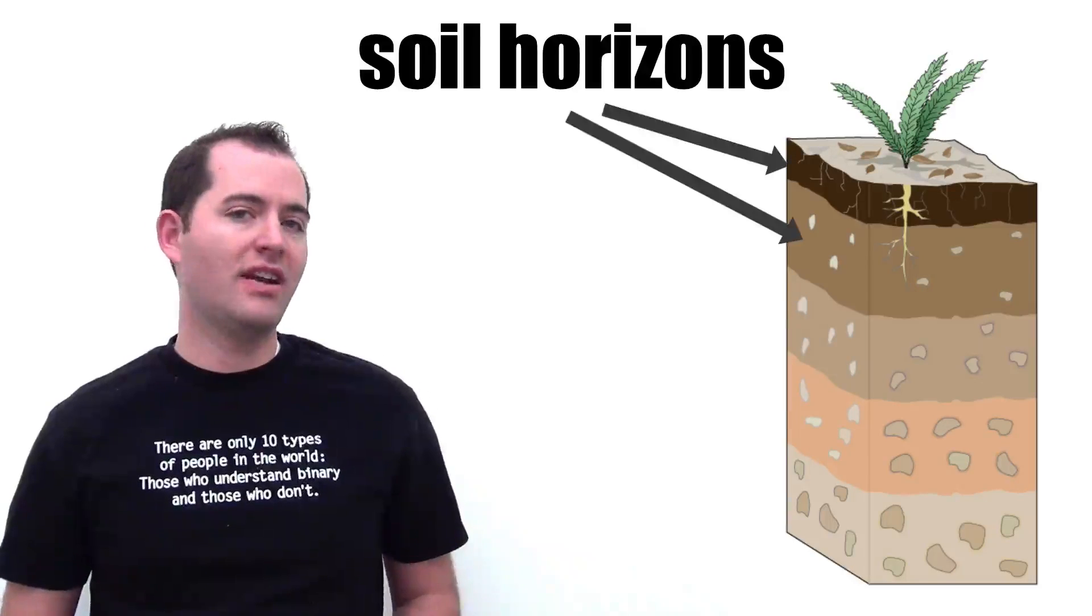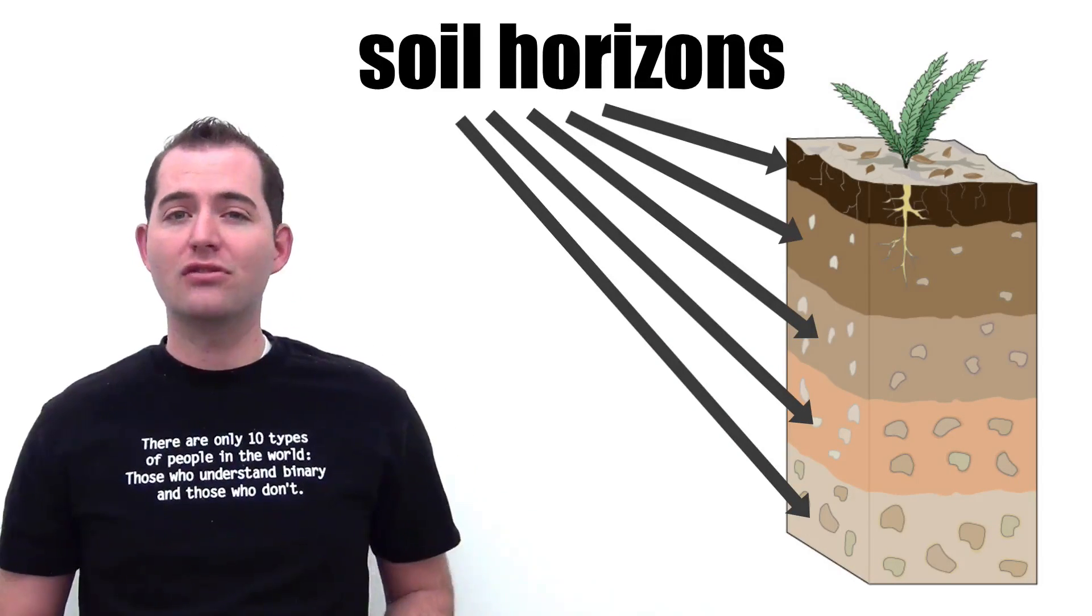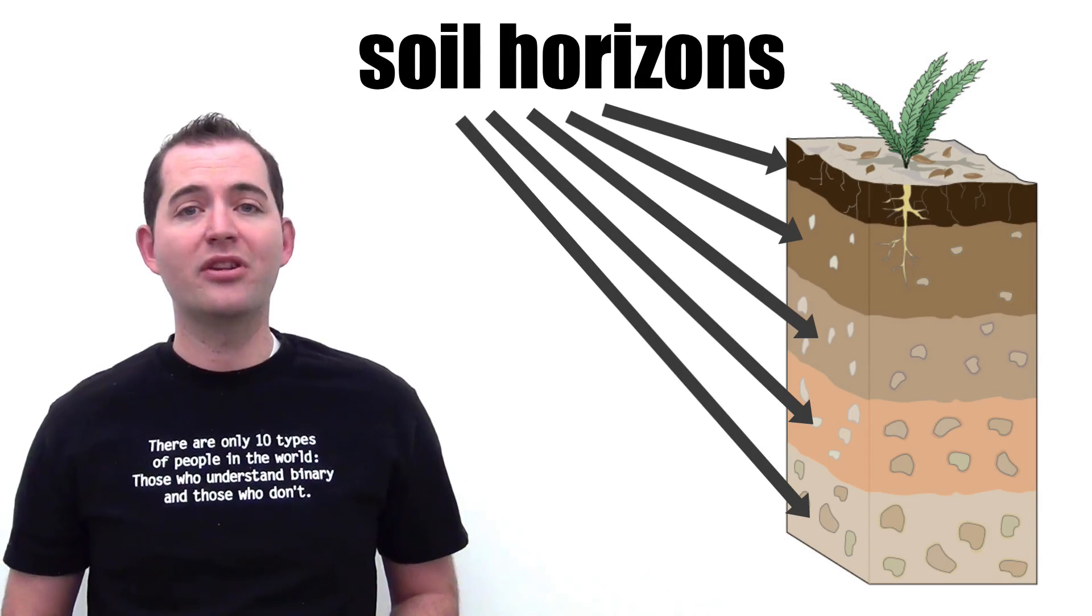Soil horizons are the different layers found in a soil profile. A soil profile is a vertical cross-section of the soil in an area and it generally reaches from the surface down to the bedrock.